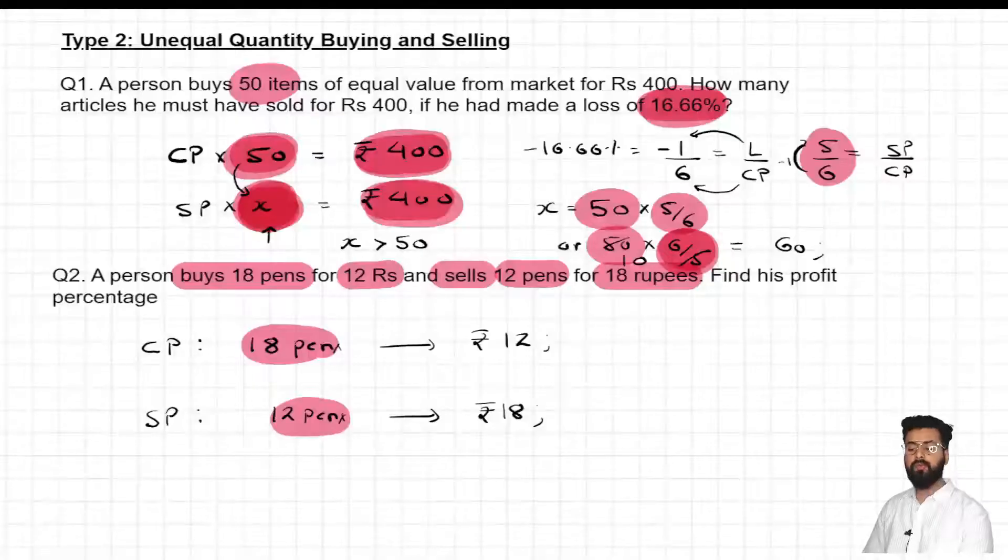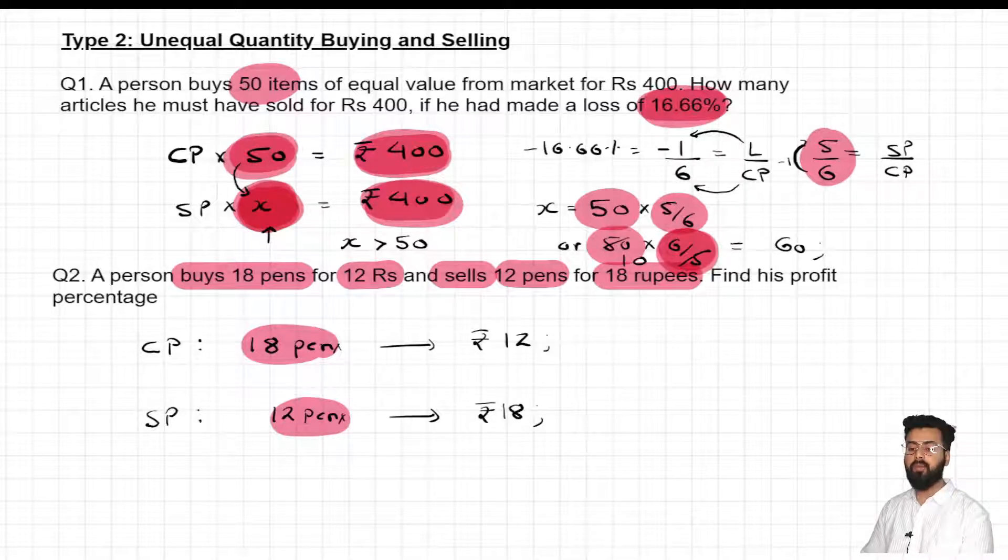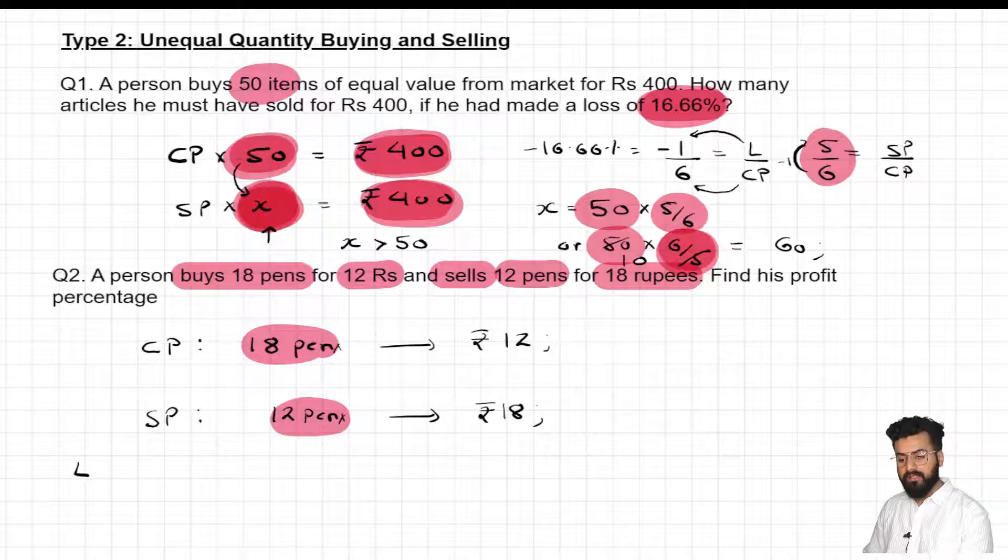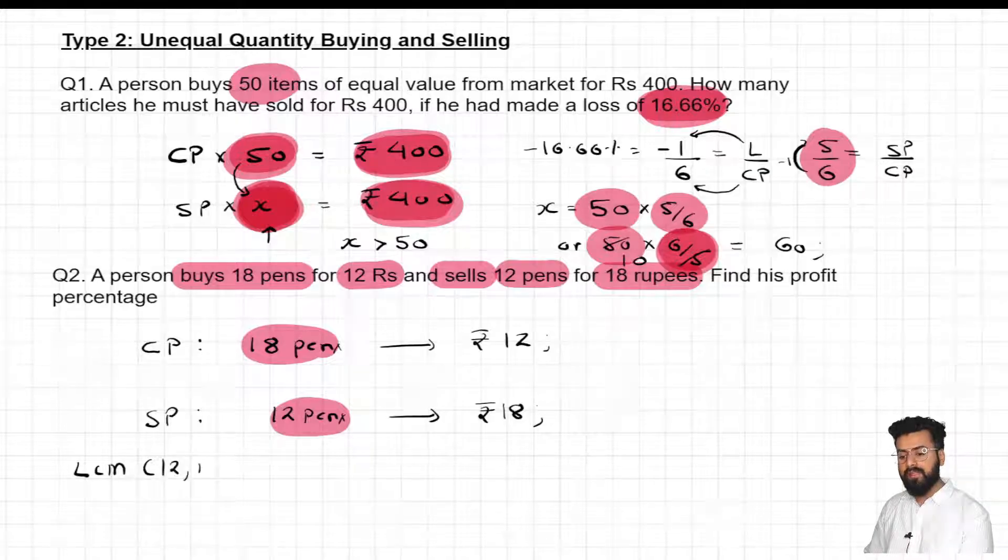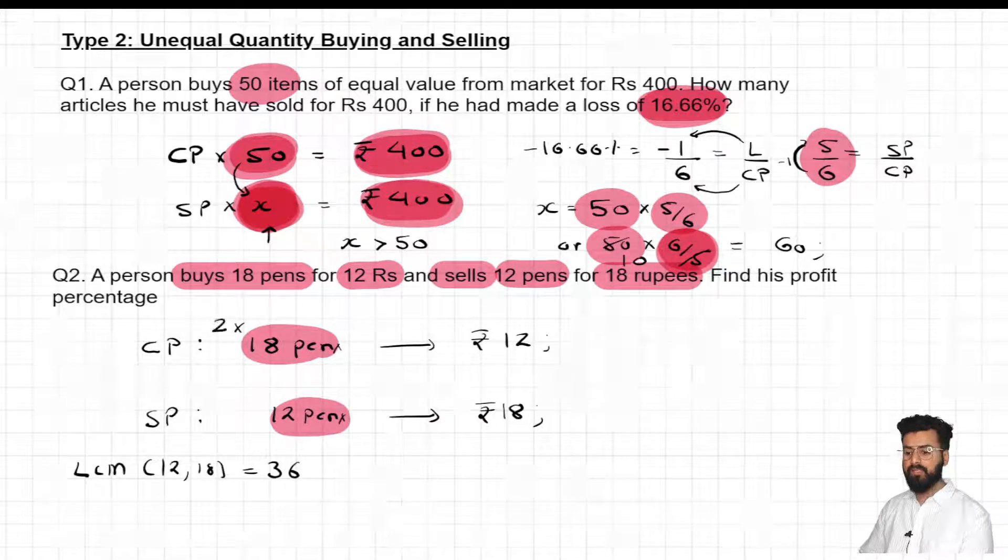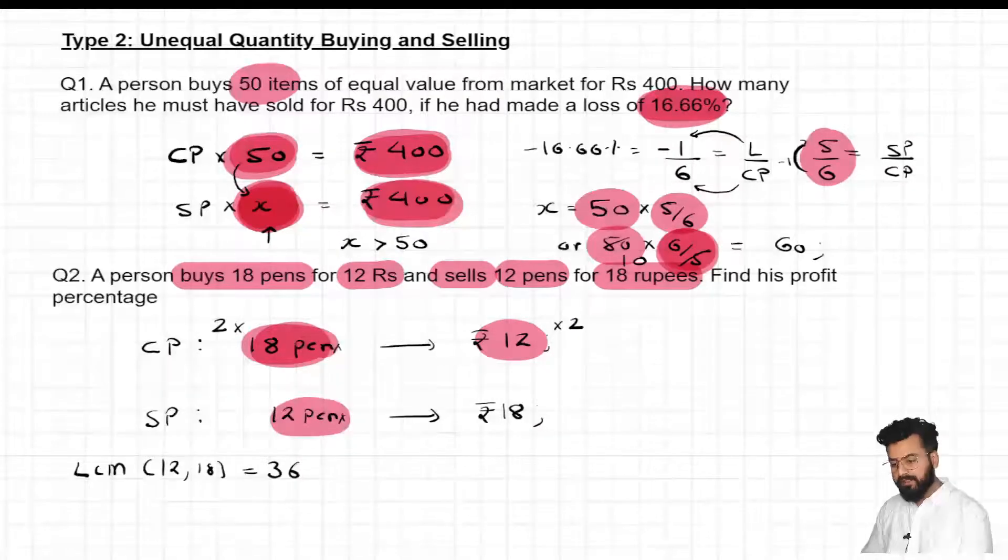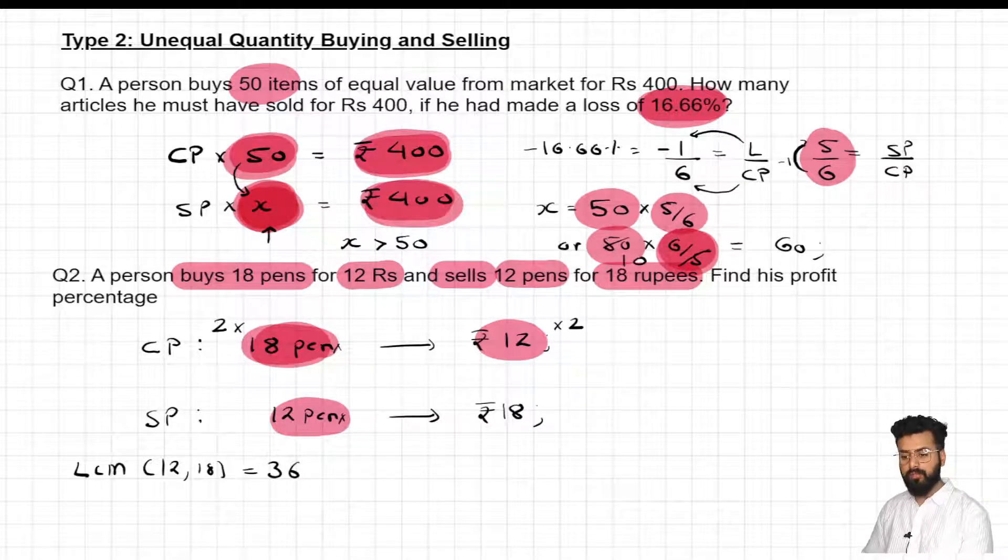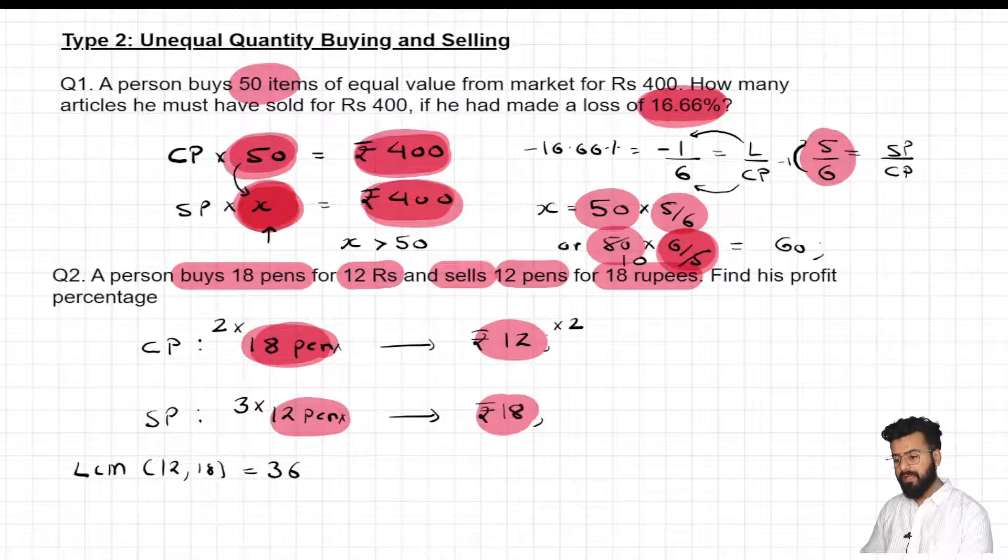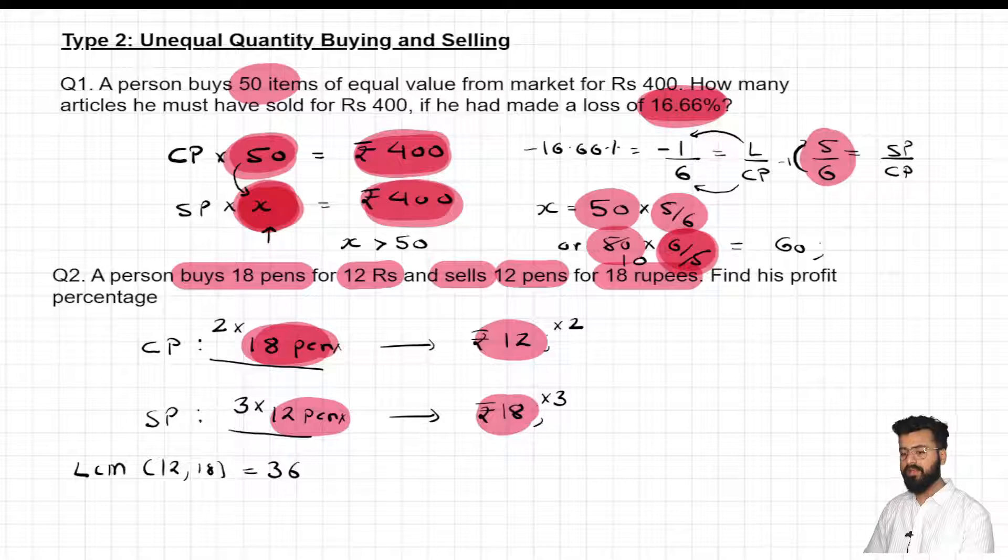Now how can you make the quantity value same? You would say sir, let me think about LCM of 18 and 12. To make 18 and 12, the two quantities same, I'll think about a common value, a common multiple. We'll think about LCM of 12 and 18. What is LCM of 12 and 18? It's 36. Now in order to make 18 as 36, I'll multiply 18 with 2. And since I'm multiplying 18 with 2, I have to multiply the right hand side value with 2 as well. Okay. Look at the data for selling price. 12, how can you make 12 as 36? You would say sir, let's multiply 12 with 3. Since I'm multiplying 12 with 3, I have to multiply the right hand side value also with the same number 3. And now you would realize that the quantities are same. 2 into 18, 36. 3 into 12, 36.